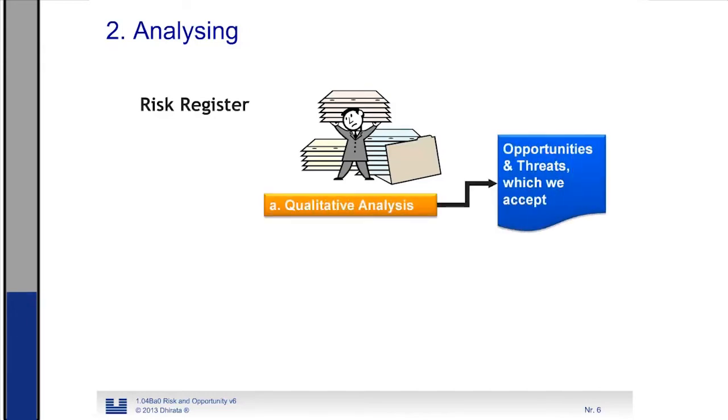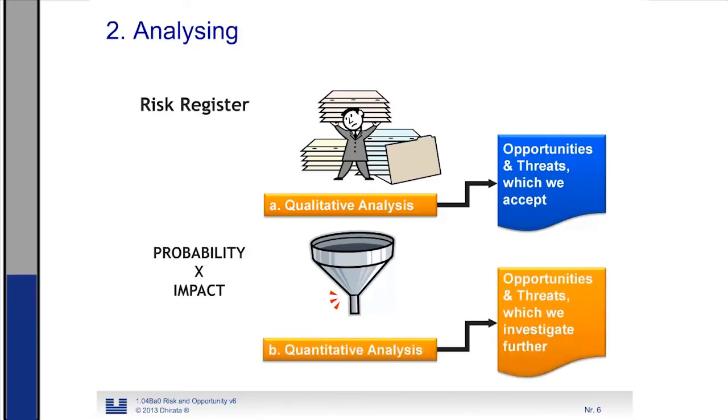Now, the first thing we are going to do is to do a qualitative analysis. So this is a quick analysis in which we are going to look which opportunity and threats, which risk are we going to accept. So what I mean with that is what risks and opportunity we are going to leave and we are not going to pay any extra attention to that. We look at high probability, we look at high impact, and these two criteria form like a function like a funnel. And from this huge list of risk we have a more dense list with risk that really need to be analyzed more thoroughly. And this more thorough analysis is the quantitative analysis. You see the difference, qualitative is in high, medium, low terminology and quantitative analysis is really with real figures, with real probability percentage. And these are the opportunities and threats that we are going to investigate further.